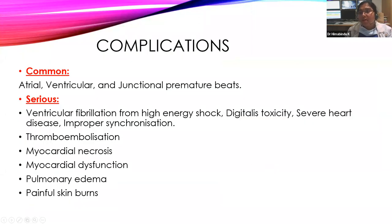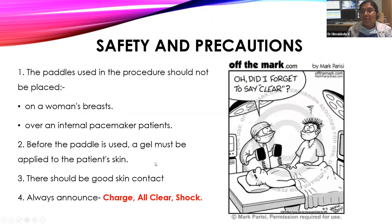Complications: common complications include atrial, ventricular, and junctional premature beats. Serious complications include ventricular fibrillation — especially with digitalis toxicity, severe heart disease, or improper synchronization — thromboembolism, myocardial necrosis, myocardial dysfunction, pulmonary edema, and painful skin burns. Safety and precautions: do not place paddles on a woman's breast or over an internal pacemaker; always use conductive gel for good skin contact; always announce 'charge, all clear' before delivering shock.